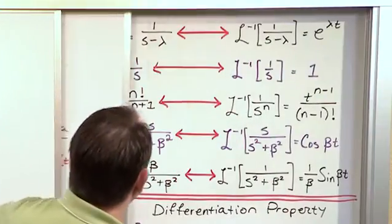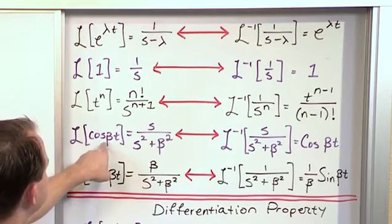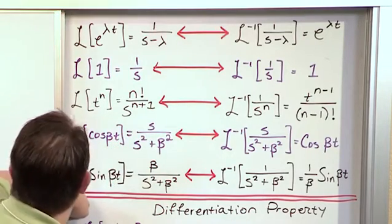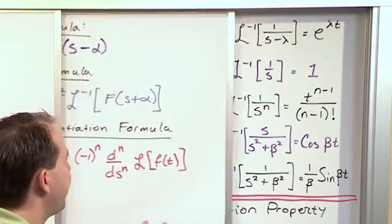In fact, I can go over here and just refresh my memory on that. Laplace of a cosine beta t is going to be s over s squared plus beta squared, depending on what's in there. In that case, it's 3, so it'll be 3 squared.